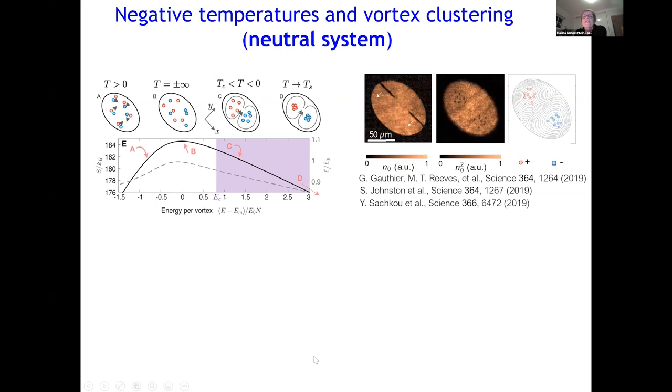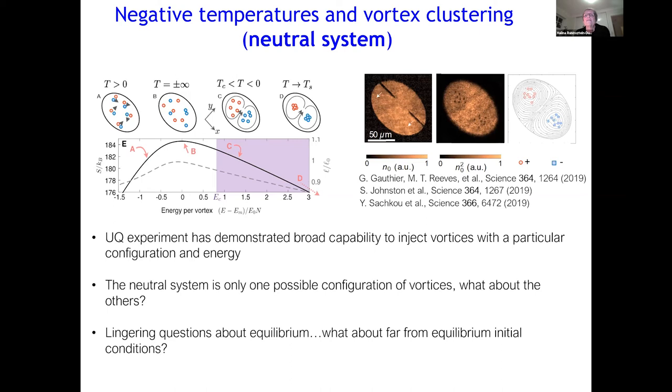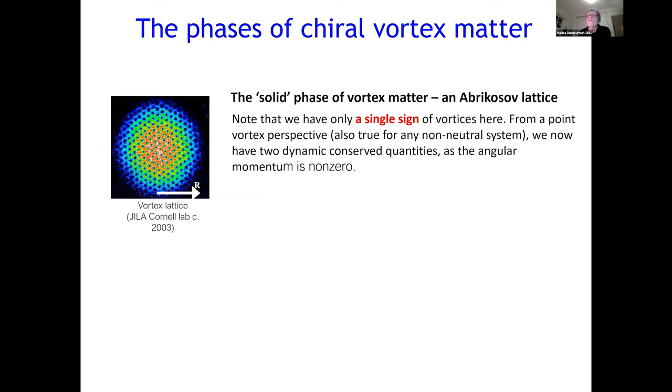So I'm running out of time, but I wanted to tell you that what we were able to do is that this experiment has demonstrated broad capability of injecting vortices with a particular configuration of energy and the neutral system is only one possible configuration of vortices. What about the others? And the lingering question that stays unanswered is about equilibrium. What about far from equilibrium initial conditions? So I hope that I have a minute or two to tell you a little bit more about the latest experiments that we do.